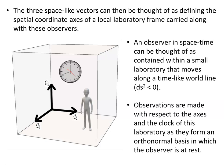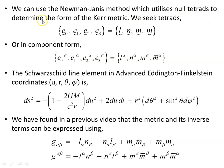We can use the Newman-Janis method, which utilizes null tetrads, to determine the form of the Kerr metric. We seek tetrads of the form e0, e1, e2, e3 — called l, n, m, and m-bar (m conjugate) in the literature. We start with the Schwarzschild line element in advanced Eddington-Finkelstein coordinates as our seed metric, and from a previous video on null tetrads we have the relationships for the metric with lowered indices and the inverse metric with upper indices in terms of the tetrad components.